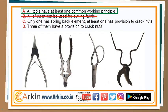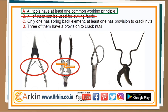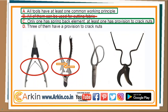Option C: Only one has a spring back element, and at least one has provision to crack nuts. Out of these tools, only this one has a spring back mechanism — none of the other tools have any such mechanism. Also note that only this tool has provision to crack nuts; these teeth are good to hold nuts and can easily break them. So option C is the correct answer.